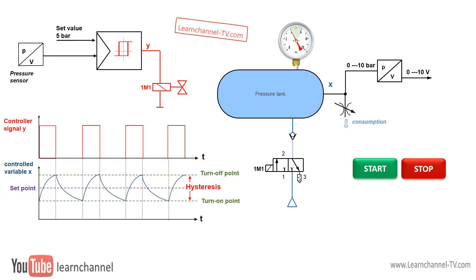It should also be mentioned that here, the pressure rises and falls in the form of an E-function. This curve is typical for a PT-1 system.